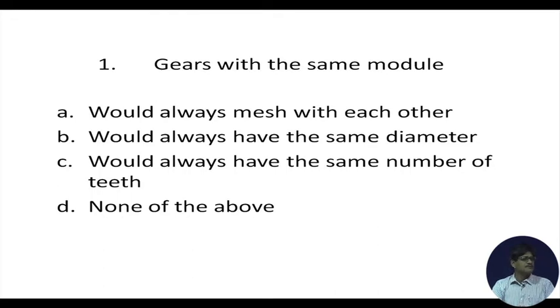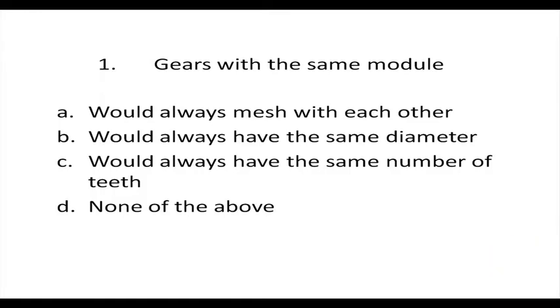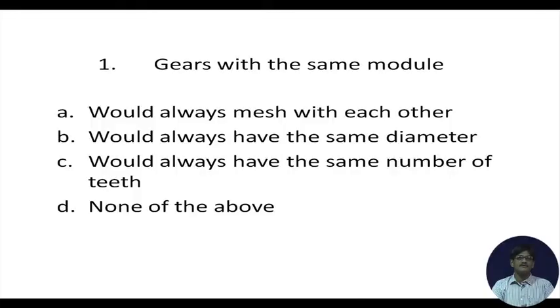Spur gears with the same module would always mesh with each other — correct. Would always have the same diameter? No, because in a family of gears with the same module, increasing the number of teeth increases the diameter. Would always have the same number of teeth? No — if all gears had the same number of teeth they would only serve to transmit power between shafts. So option A, 'would always mesh with each other,' is correct.